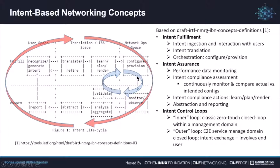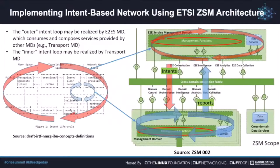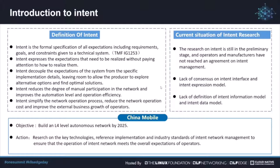That inner loop is the focus of our talk for this presentation. The classic expectations given to a network system are hard to rely on. The intent decouples the expectations of the system from specific implementation details, giving room to allow the producer to deploy alternative options and find optimal solutions. The intent also reduces the degree of manual participation in the network and improves automation level, operation efficiency, and the business growth of operators.